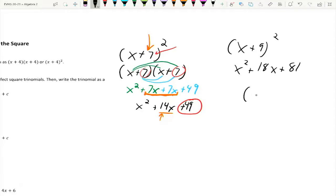It works the same way with negative numbers. (x - 3)². Take that number and double it and I get -6x. Take that number and square it. Negative 3 times negative 3 is positive 9.